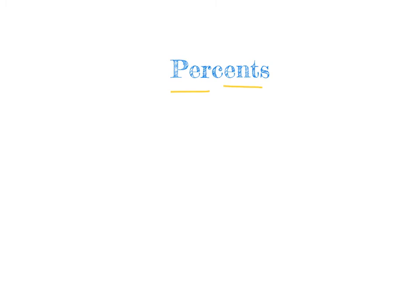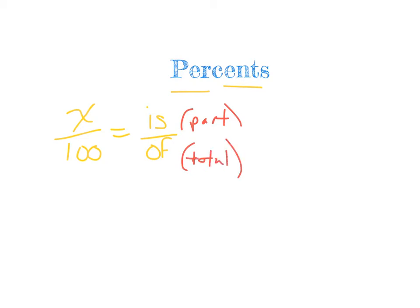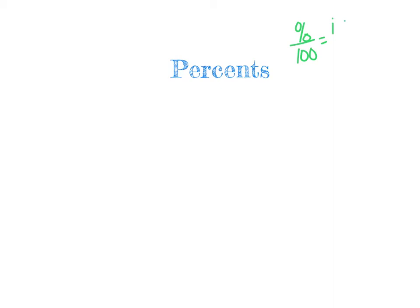There's a helpful formula we can use for percent questions. When solving for unknowns in percent-type questions, we use: percent over 100 equals is over of. 'Is over of' is the same thing as part over total. We used that in the previous question — we were looking at how we got 18 out of a total of 20. Often these questions use the vocabulary 'is' and 'of,' so the formula is: percent over 100 equals is over of.